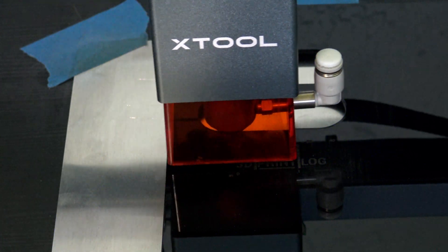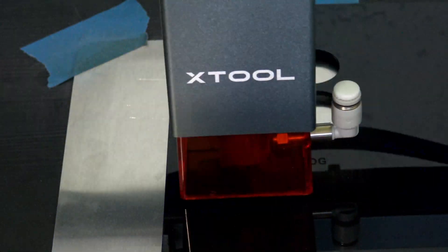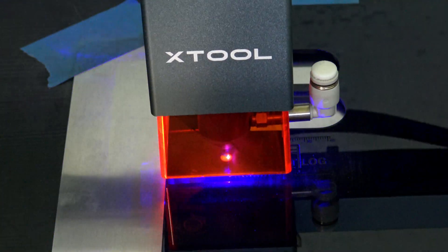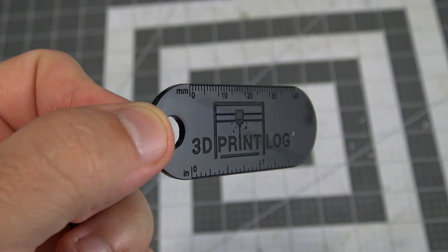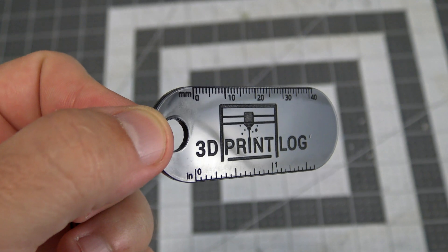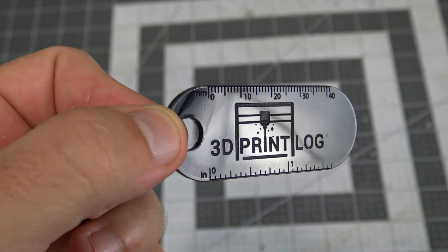Because the laser is visible light, it cannot cut clear acrylics. However, opaque acrylics like this black acrylic works very well. I love cutting keychains. They are one of my go-to first projects. The D1 Pro engraves very precisely, both the roster logo and the vector ruler engraved accurately.